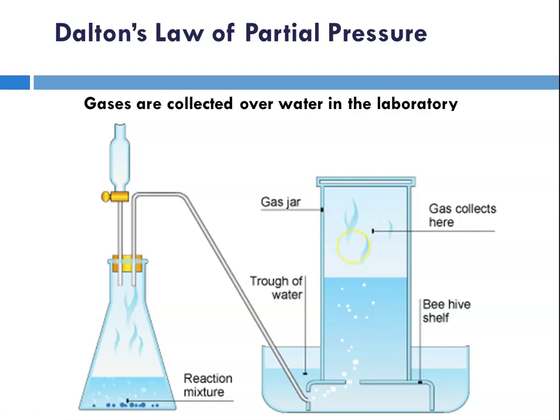So we use Dalton's law of partial pressures typically to figure out what the volume and pressure of the dry gas would be when you eliminate the pressure of water.